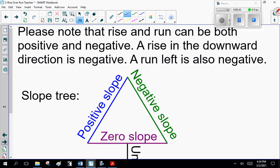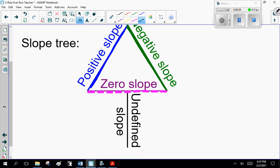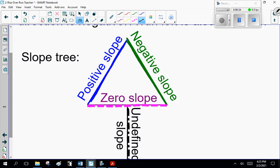I also want you to note, the rise and run can both be positive and negative. Rise in a downward direction is negative. You go down it's negative. Running left is also negative. I want you to remember the slope tree: positive slope if you're going up, it's positive. If you're going down, it's negative. If you're going straight across, that's zero slope. And in a later lesson, we'll talk about undefined, going straight up and down. Technically, it doesn't exist, but we'll explain that later.